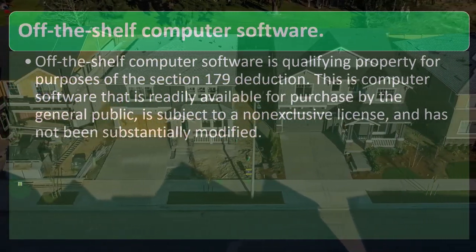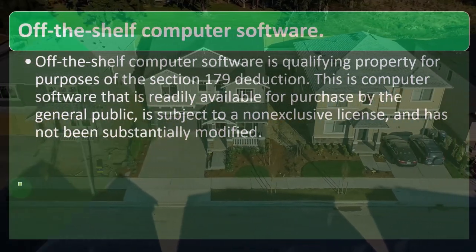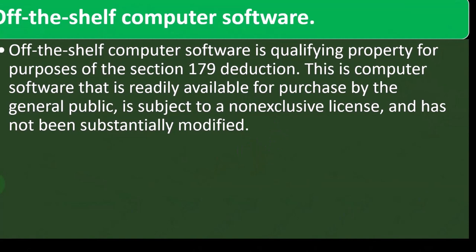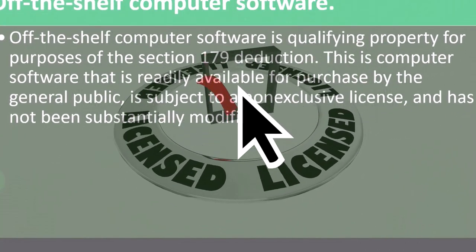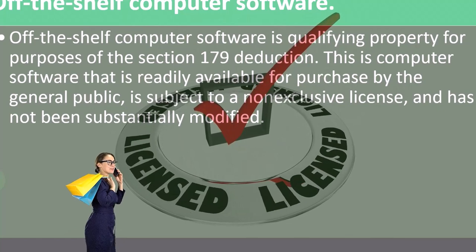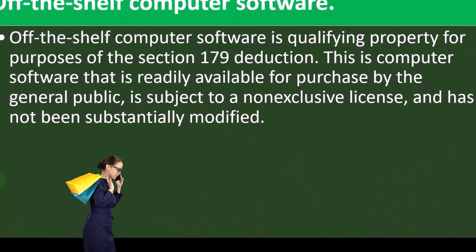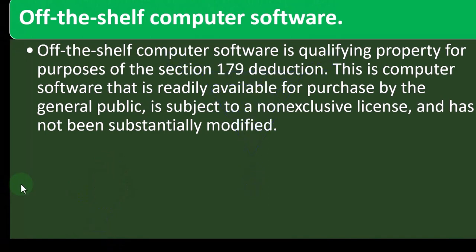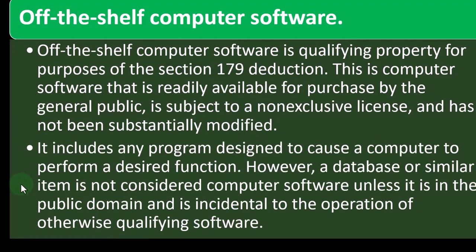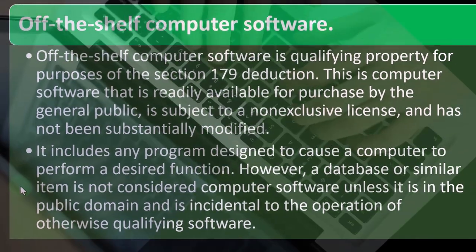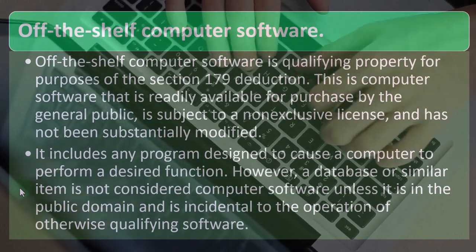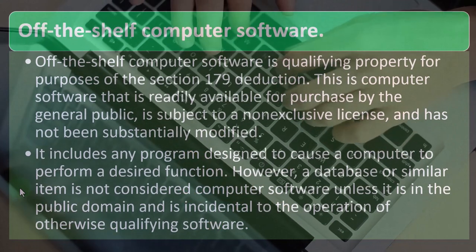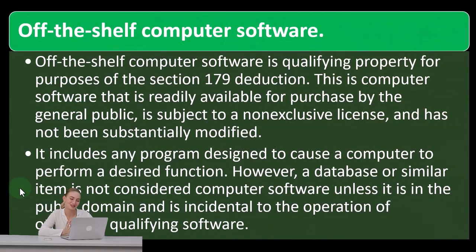Off-the-shelf computer software is qualifying property for purposes of the Section 179 deduction. This is computer software that is readily available for purchase by the general public, is subject to a non-exclusive license, and has not been substantially modified. Software becomes an issue because the question is: did you just buy commercial off-the-shelf software, or is it research and development software created internally? That changes the accounting treatment. It includes any program designed to cause a computer to perform a desired function. However, a database or similar item is not considered computer software unless it is in the public domain and is incidental to the operation of otherwise qualifying software.